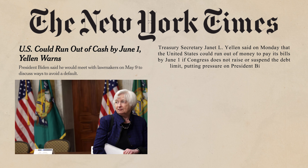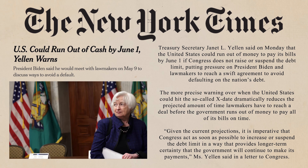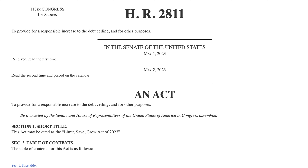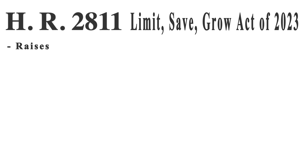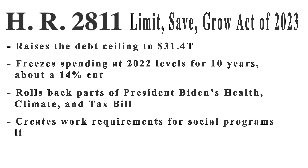So what's happening now? Last week Treasury Secretary Janet Yellen said the United States could default on its debt as soon as June 1st if the debt ceiling isn't increased. As you might imagine, that caused some alarm. House Republicans are trying to take advantage of this moment because lifting the debt ceiling is must-pass legislation — Republicans are hoping to get some spending cuts paired with a debt ceiling increase. Last week they passed a bill to raise the debt ceiling but tied it to major spending cuts. Their bill, dubbed the Limit Save Grow Act of 2023, would raise the debt ceiling up to $31.4 trillion but freeze spending at last year's levels for a decade, ultimately amounting to about a 14 percent cut. The bill would also roll back parts of Biden's health, climate, and tax bill, create work requirements for social programs like food stamps and Medicaid, and expand fossil fuel production.